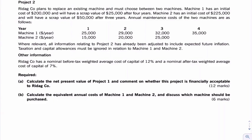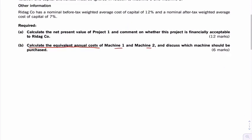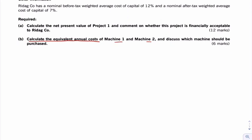Okay, let's have a look at this question. We're looking at part B. Calculate the equivalent annual costs of machine 1 and machine 2, and advise which is to be purchased. As we know, what we need to do is set out the number of years.